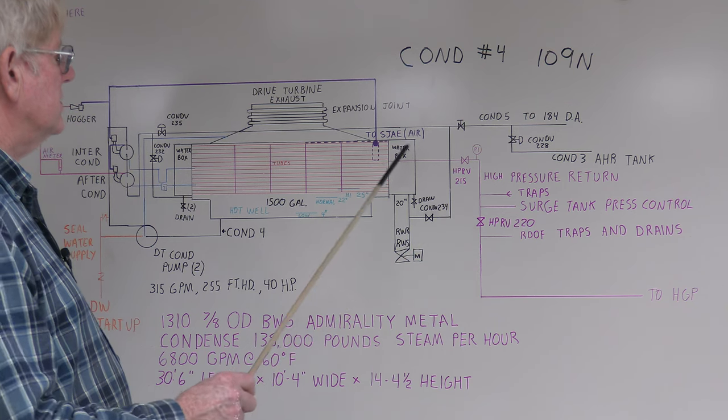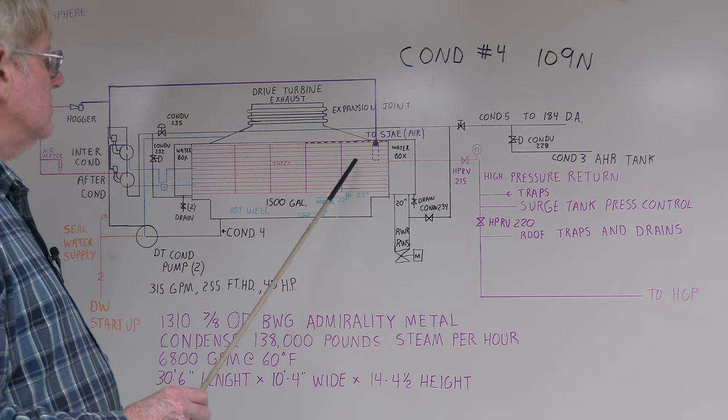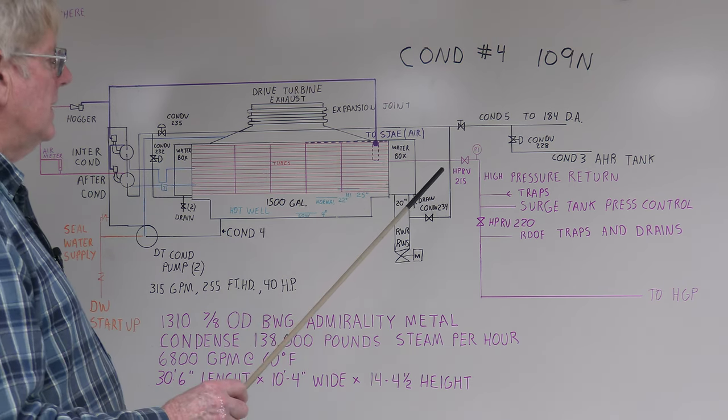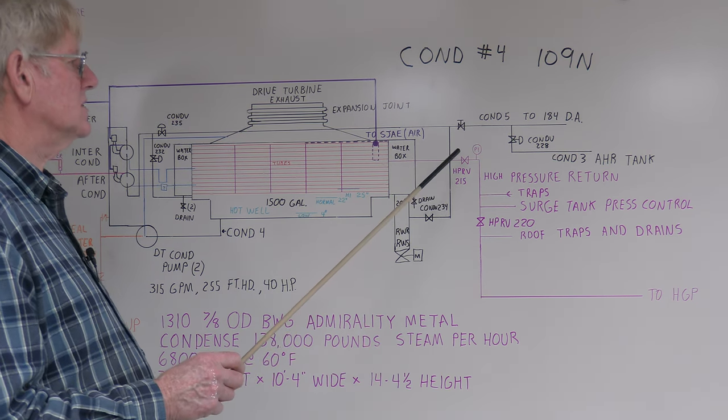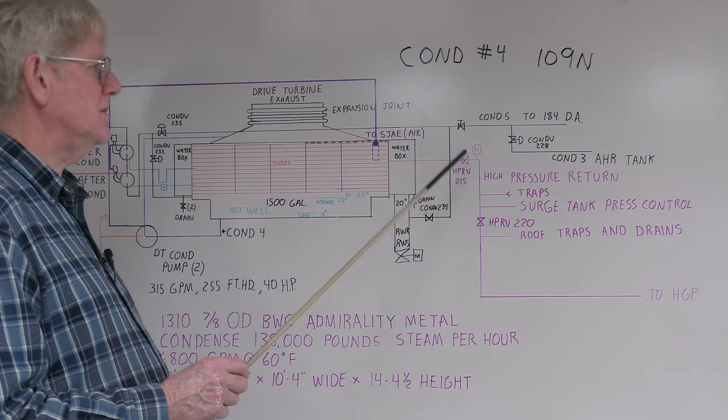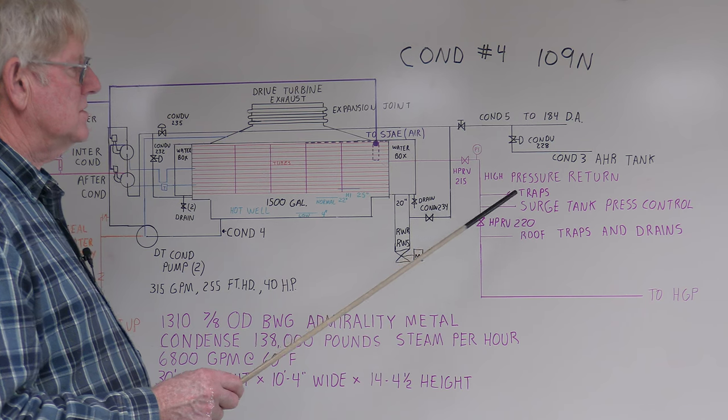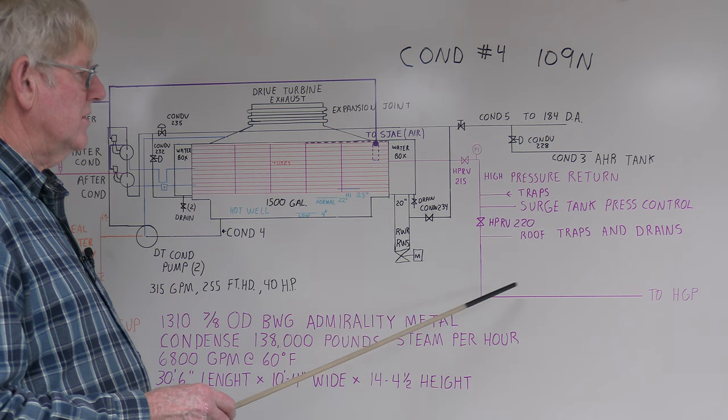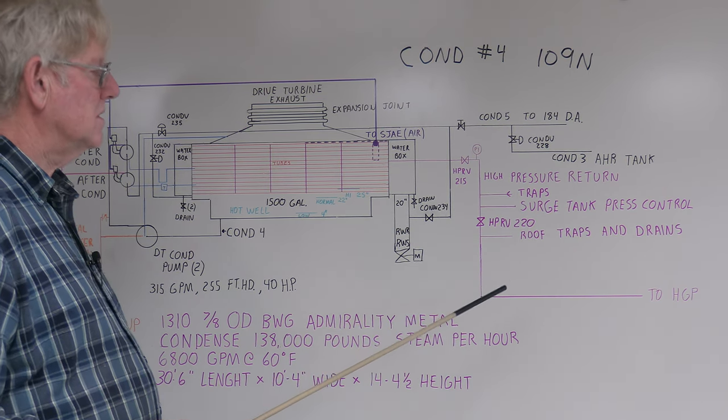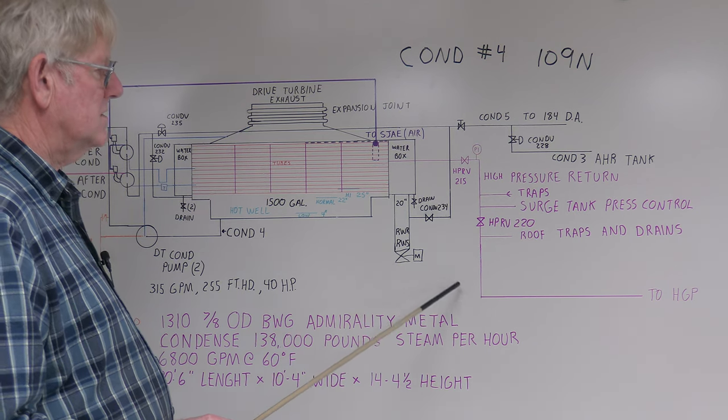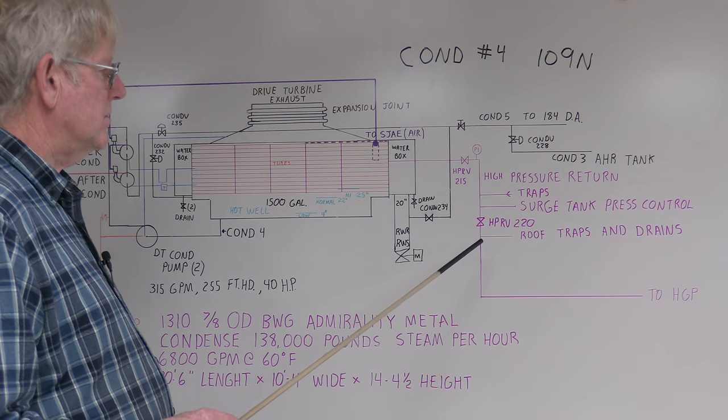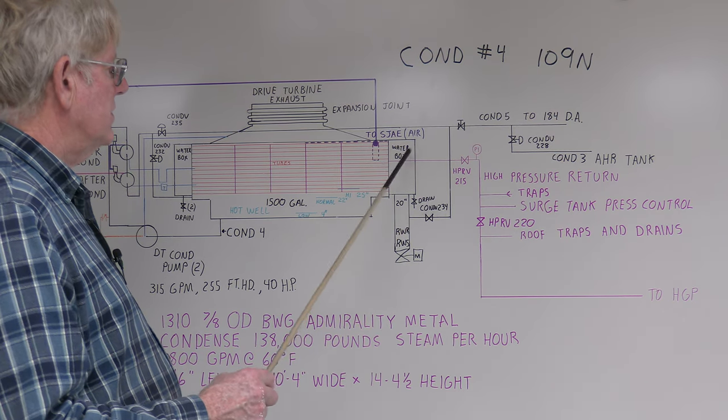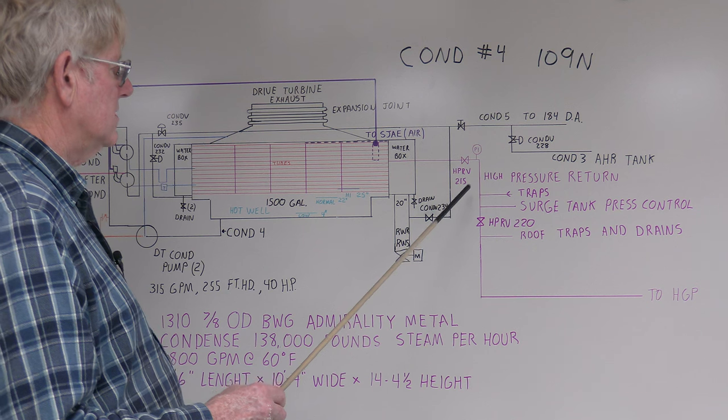Another part of this: you had your high pressure return came back in. I believe that there were just two surface condensers valved in for high pressure return. I'm not sure what the pressure was - there was a manual valve that had to be adjusted. I think it was between maybe 9-15 pounds. You had all your traps, surge tank pressure control, roof traps and drains would come back into this. I know the Hanford generating project took a lot of the high pressure return to number one and two surface condensers. They had a control valve. I think all the roof traps and drains went back over there. For startup we could take it back here, but I know we did bring some back - it's probably just our traps and local drains.